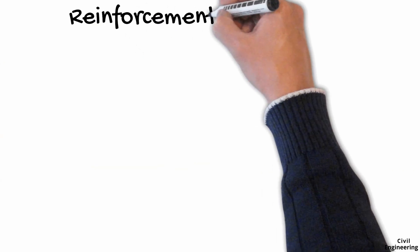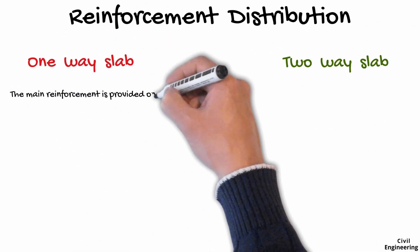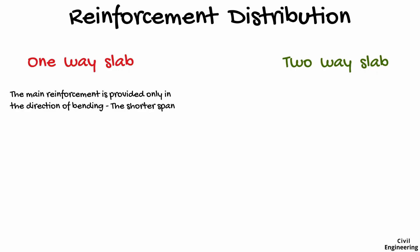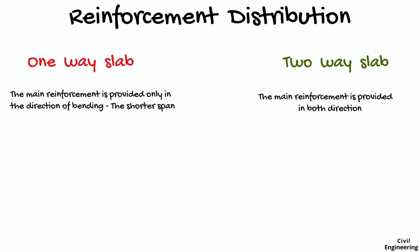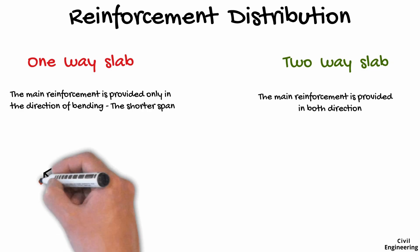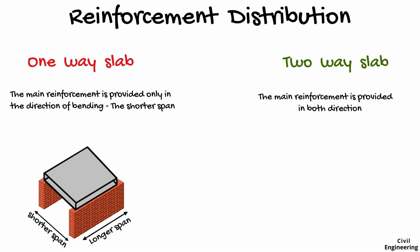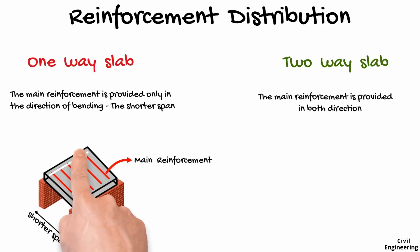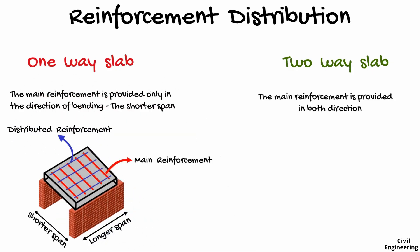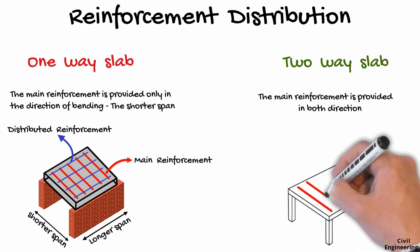Now let us look at the reinforcement distribution in one-way slab and two-way slab. In a one-way slab, the main reinforcement is provided only in the direction of bending, that is the shorter span, while the distributed or temperature reinforcement is provided in the longer direction. In a two-way slab, the main reinforcement is provided in both directions.